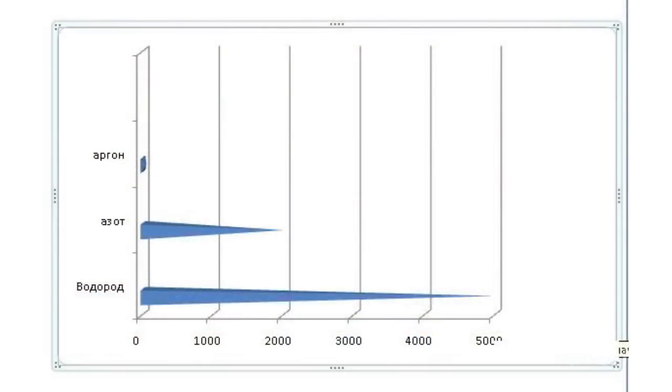The pumping speed depends on the nature of the gas. For example, the pumping speed for hydrogen would be 5000 liters per second, nitrogen 2000 liters per second, and argon 50 liters per second.